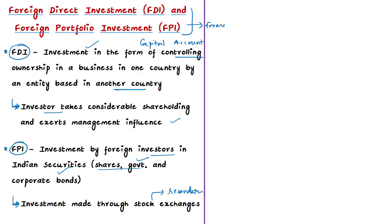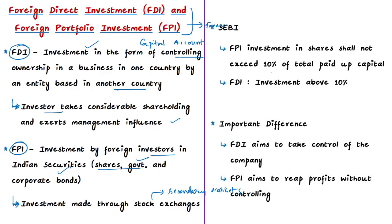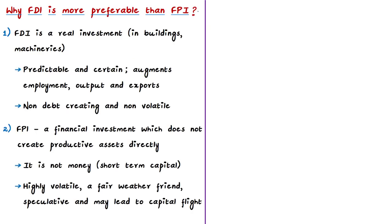As per SEBI, FPI is investment in shares of a company not exceeding 10% of the total paid-up capital of the company. Any investment above 10% is considered FDI, with which the foreign investor can exercise control in the management of the company. The real difference between FDI and FPI is that FDI aims to take control of the company, whereas FPI aims to reap profits by investing in shares and bonds without controlling the company.